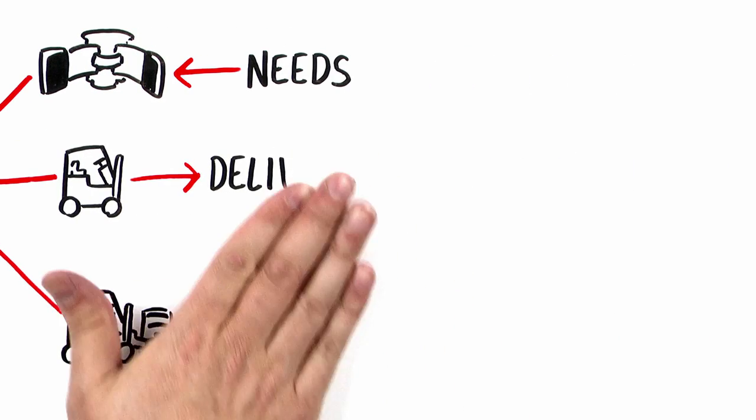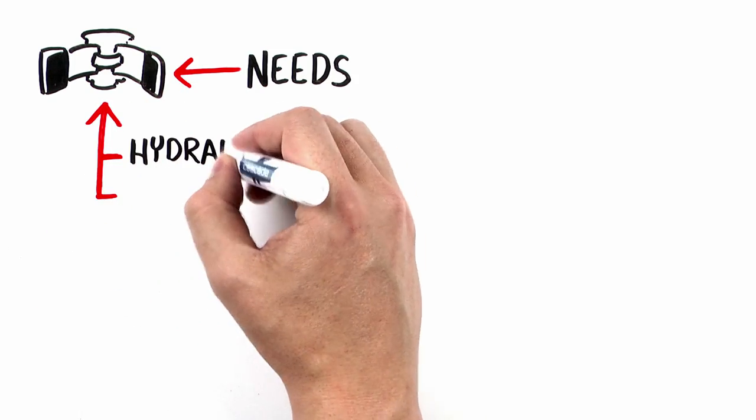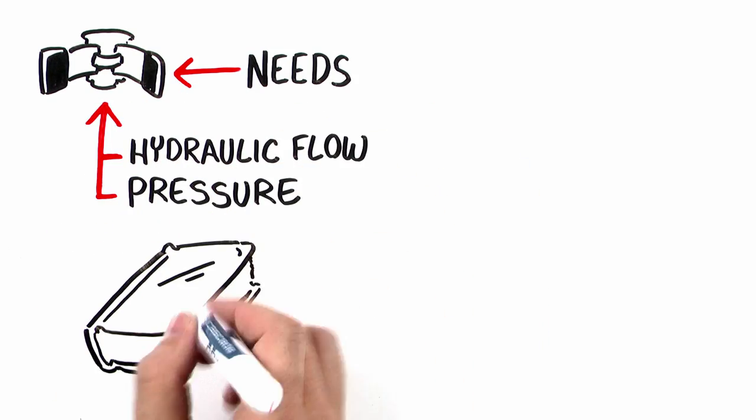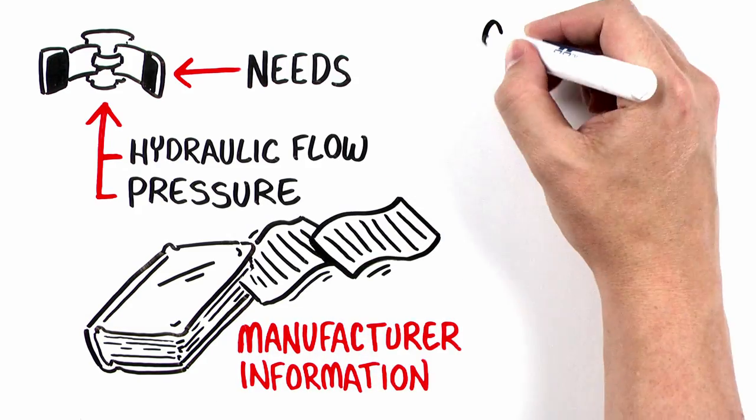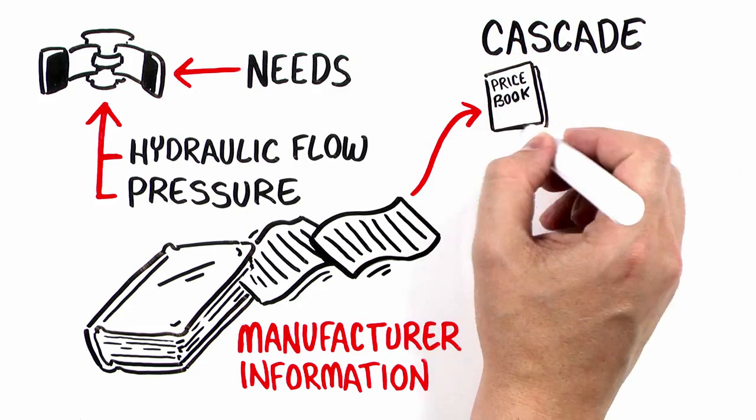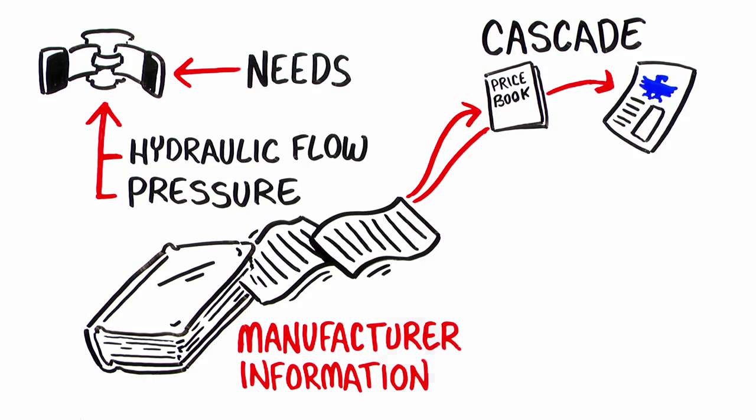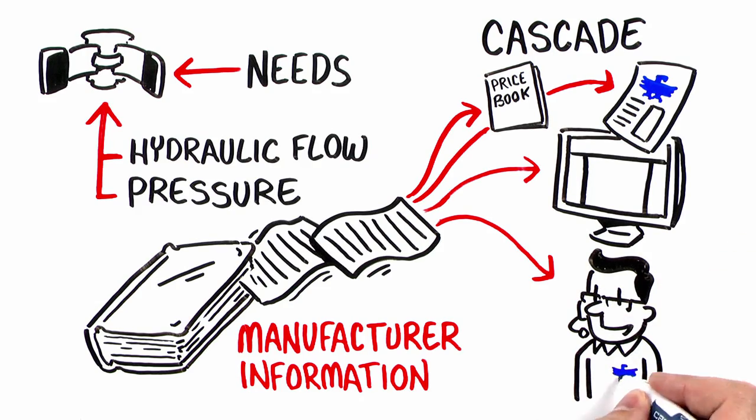First, take the time to understand what the attachment needs from the forklift in terms of hydraulic flow and pressure. All attachment manufacturers provide this information in some way. And Cascade makes this information easily accessible in the price book, on product brochures, through our website, or even with a simple call into our customer service department.